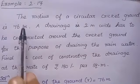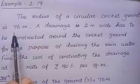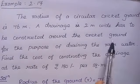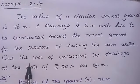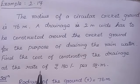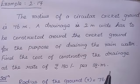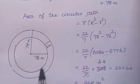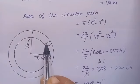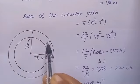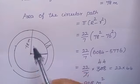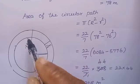Example 2.17: The radius of a circular cricket ground is 76 meters. A drainage 2 meters wide has to be constructed around the cricket ground for draining rainwater. Find the cost at the rate of rupees 180 per square meter. The radius of the cricket ground is 76 meters, the drainage is 2 meters wide. For the outer circle radius, we add 76 plus 2 to get 78 meters.